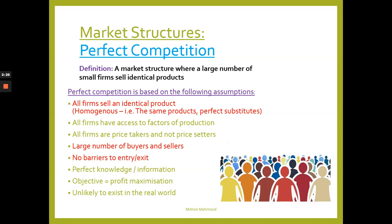All firms have access to factors of production: labour, land, capital, and enterprise. Labour is our employees, staff members, and workforce. Capital is the machinery needed to operate day-to-day or to produce goods, and can also be the money used to start up the business. Land is the resources used to create products or services, including the actual premises and rent paid. Enterprise is the entrepreneur bringing together all the other factors of production.